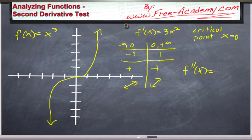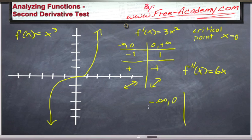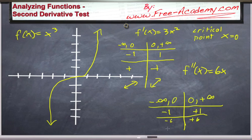Our second derivative is equal to 6x, so we have another critical point at x equals 0. Now that we know this point is occurring at x equals 0, let's set up another table for the second derivative, just like we did for the first derivative. This is our second derivative test. We'll take test values of negative 1 and positive 1, and putting those in we get negative 6 and positive 6 out. So we have a negative from negative infinity to 0, and a positive from 0 to positive infinity — what does this tell you?